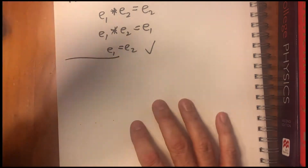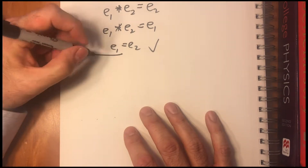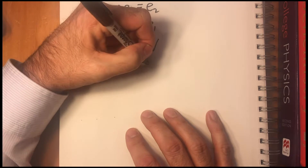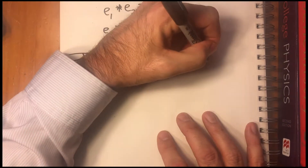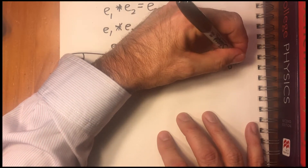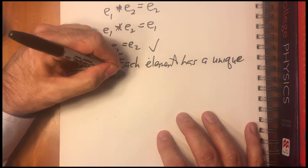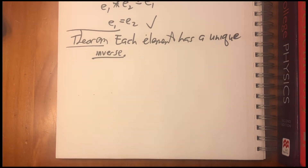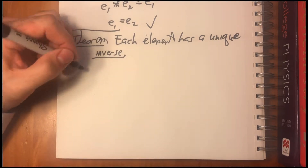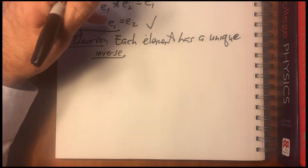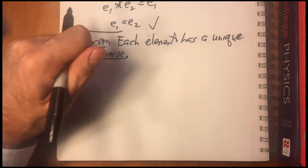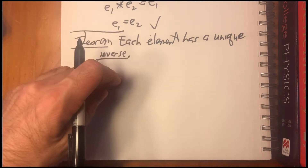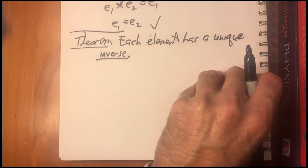The next important property of groups is that each element has a unique inverse. These two things are very important because they really limit the structure of the groups, as we'll see in a minute. So what we're saying is that not only is the identity unique, but each element has a unique inverse — there's only one element in the group that you can multiply by to get the identity.